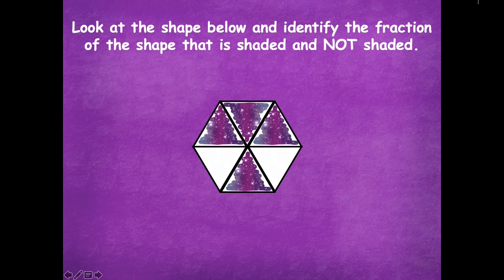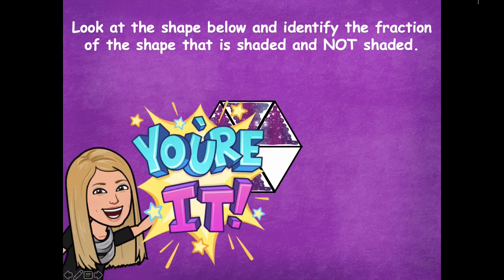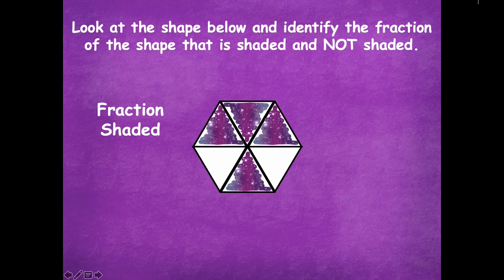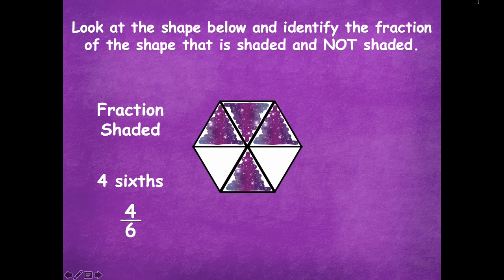Let's look at another one. Write on your board the part that is shaded and not shaded in fraction form. Pause the video, solve, then click play when you're ready to go over it together. The fraction that is shaded — let's count — it's divided into six equal parts, so the fractional unit is sixths: 1/6, 2/6, 3/6, and 4/6. Either form is correct.